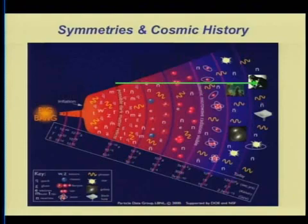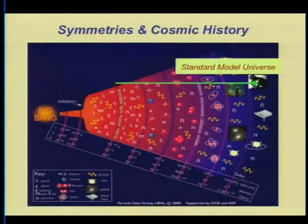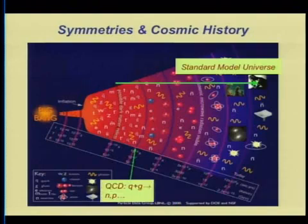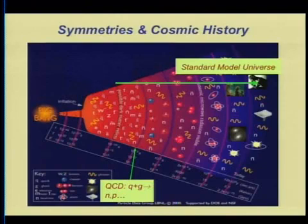Starting when the universe was about 10 picoseconds old is the era when the symmetries of the standard model and their broken nature do a very good job of describing most of the microphysics of the universe. Starting when the universe was about 10 microseconds old is the era when quarks and gluons were confined into hadrons.